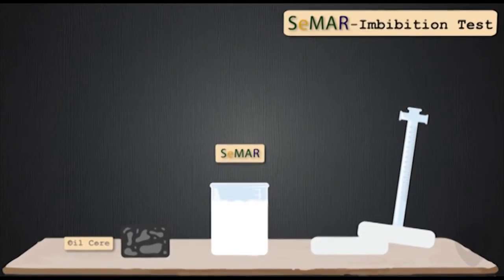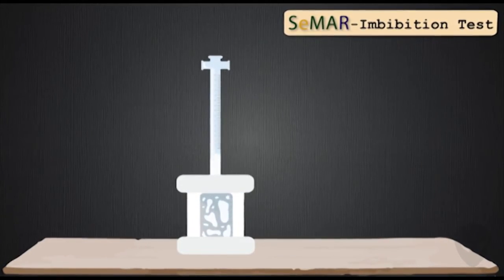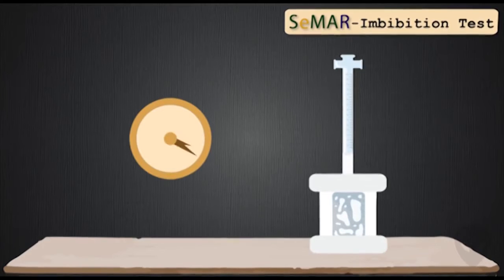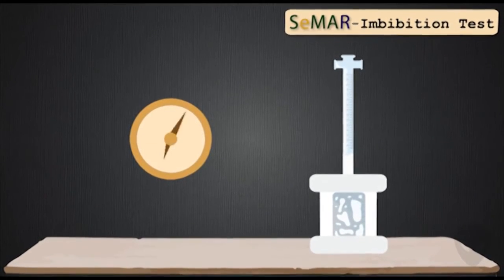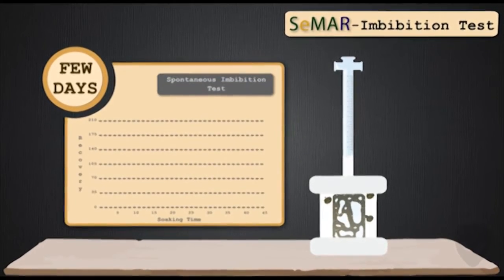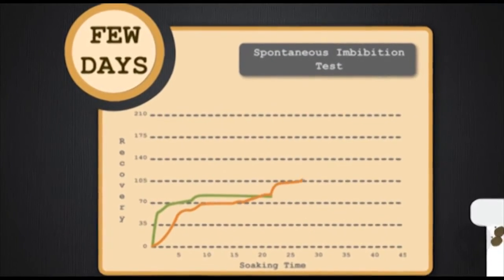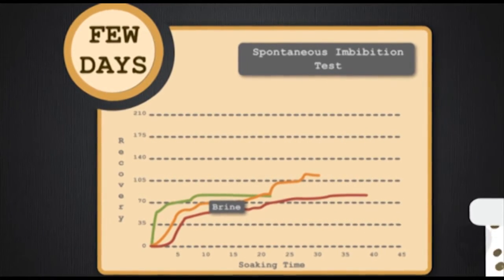To see how much oil production could be improved by using SMAR, we must do some laboratory tests. One of the tests is imbibition tests, where two core samples saturated with oil, one soaked in brine water and the other one soaked in SMAR. After several days of examination, the sample that's soaked with SMAR always gives a better oil recovery than the one which is soaked in brine water.